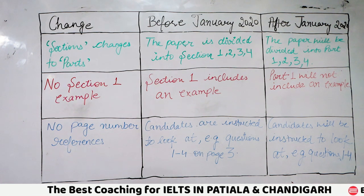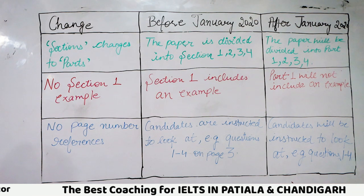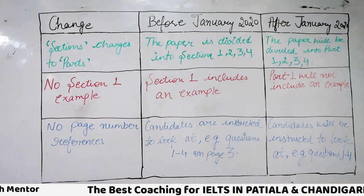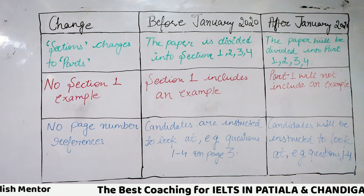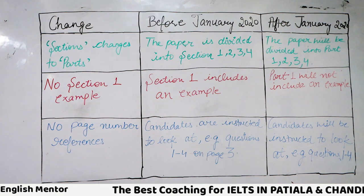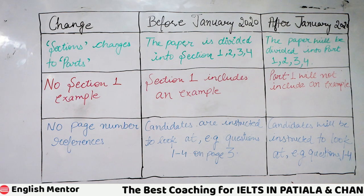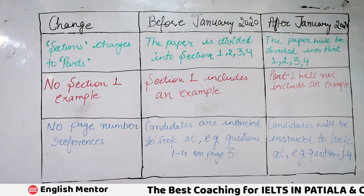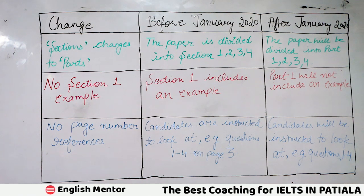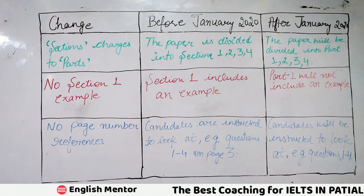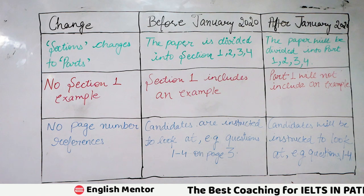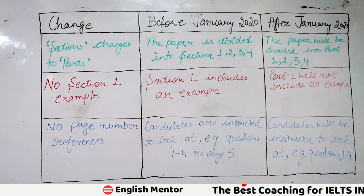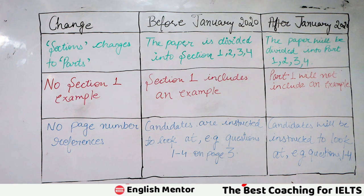The third change is there will be no page number references. Earlier there used to be pages in the listening test, and candidates were instructed to look at the question on page number 1, page number 2, page number 3, page number 4. But now there will be no pagination. Candidates will be instructed to look at question number 1 to 5, 5 to 10, 11 to 15, 16 to 20, 30 to 40. There will be no page numbers anymore.